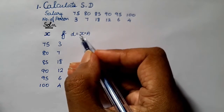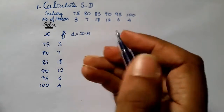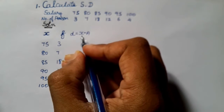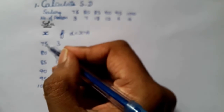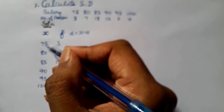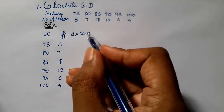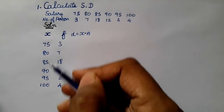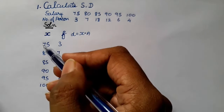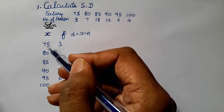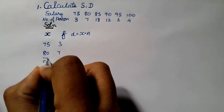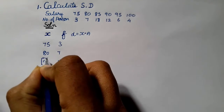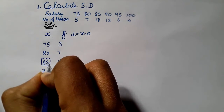D is equal to x minus a. The midpoint value is 75, and a, the assumed mean, is 85. This gives us the number of frequency values in each class.